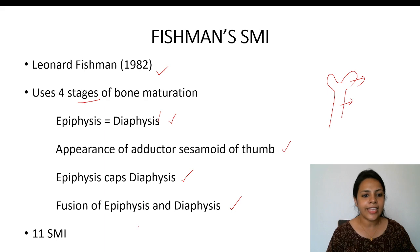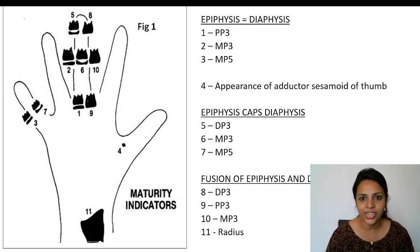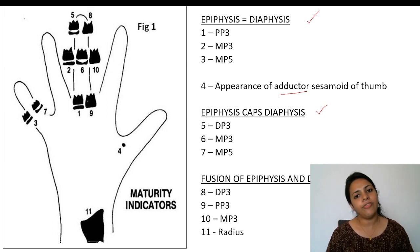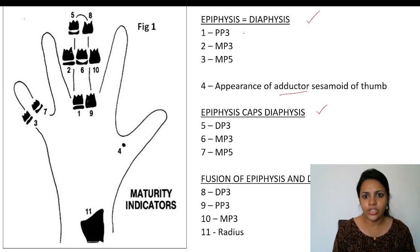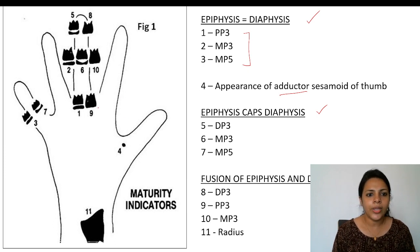There are 11 skeletal maturity indicators given by Fishman. Under the four stages — epiphysis equal to diaphysis, appearance of adductor sesamoid, epiphysis caps the diaphysis, and fusion of epiphysis and diaphysis — we have many sub-stages. The first three stages involve the epiphysis being equal to the diaphysis, as you can see in the image.